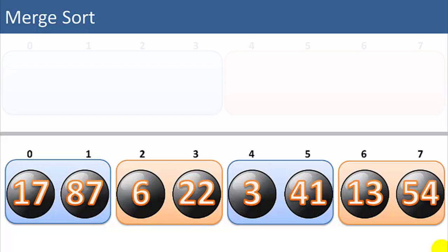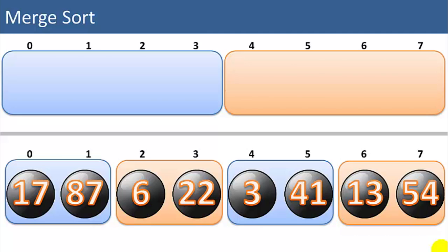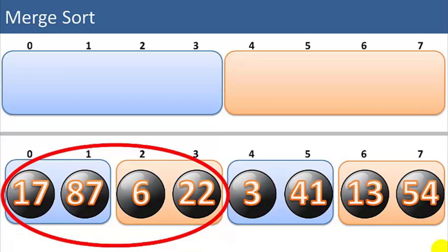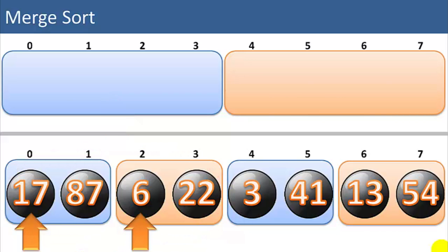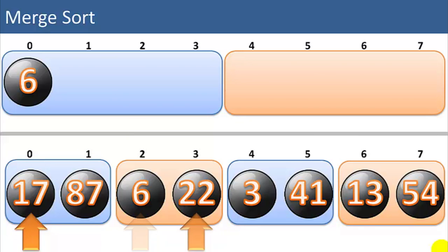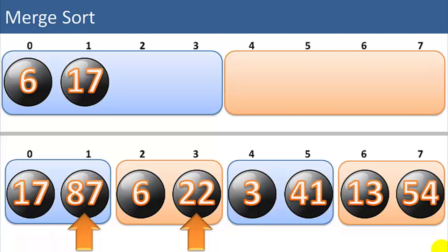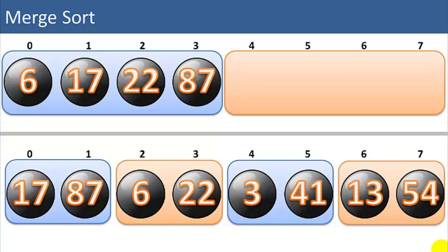Now we merge these four lists of two items each into two lists of four items each. We start with the four items 17, 87, 6, and 22 — two lists of two items in sorted order — and merge them into one list of four items. We compare 6 to 17; 6 is smaller, so we place that up and move our pointer to the 22. We compare 17 to 22; 17 is smaller, so we move that up and shift the pointer to the 87. We compare 22 to 87; 22 is smaller. Now we can just copy up the remaining item — the 87. The left list is now in sorted order.